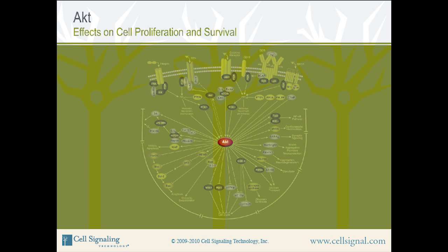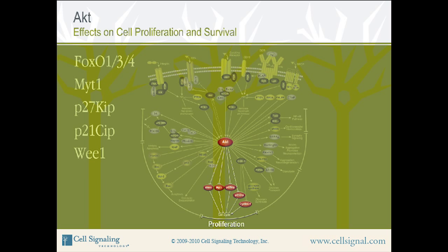Effects on Cell Proliferation and Survival: AKT promotes cell proliferation by inhibiting a number of cell cycle inhibitors. AKT targets in this group include FOXO1-3 and 4, MYT-1, P27-KIP, P21-CIP, and WEE-1.